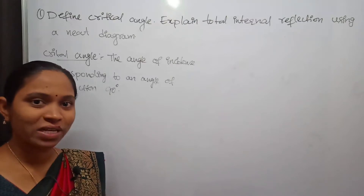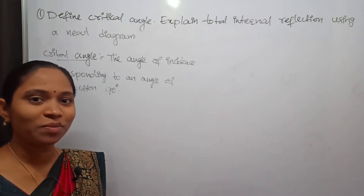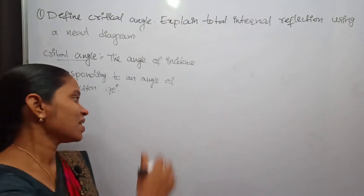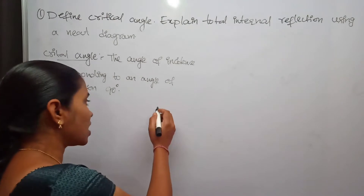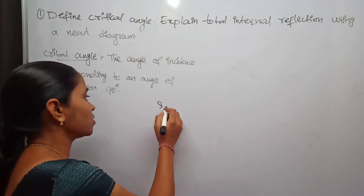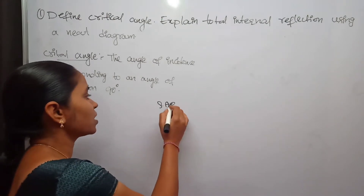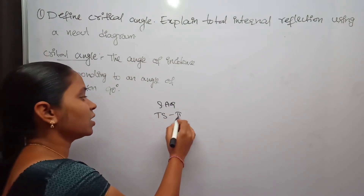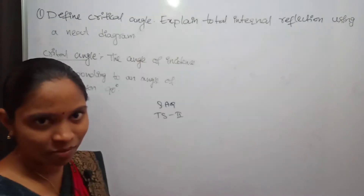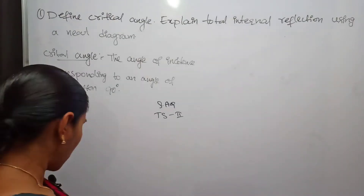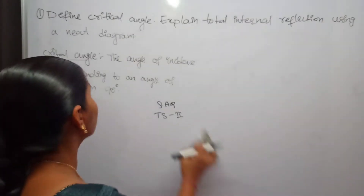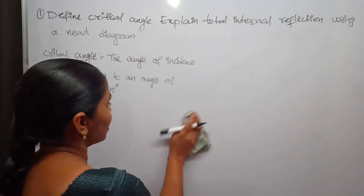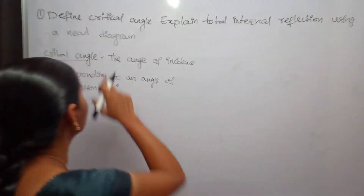Hello students, welcome to Swapna Physics Classes. From this class I am going to start explanation for short answer questions and answers for TES Intermediate Second Year IPE examination. The question is: define critical angle and explain total internal reflection.